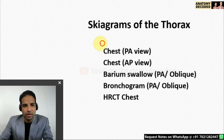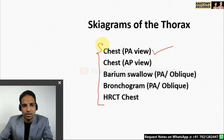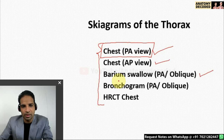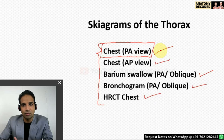These are the list of radiographs in thorax, out of which the chest X-ray posterior-anterior view is the most frequently asked radiograph in exams. The other skygrams include chest X-ray anterior-posterior view. In contrast skygrams, barium swallow is the most frequently asked. Then there is a procedure called bronchogram, and lastly HRCT chest. We will see all these one by one.